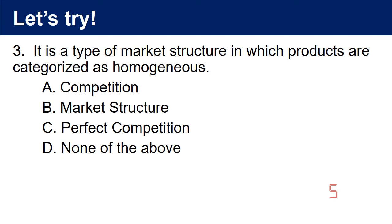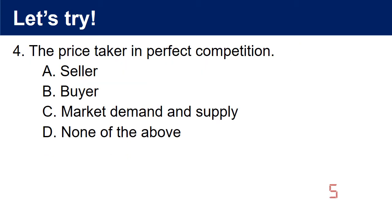Question 3: It is a type of market structure in which products are categorized as homogeneous. A. Competition. B. Market structure. C. Perfect competition. D. None of the above. The answer is C, perfect competition.